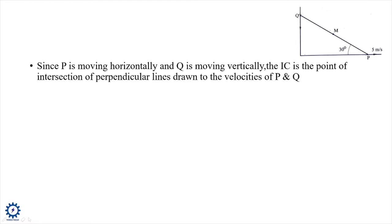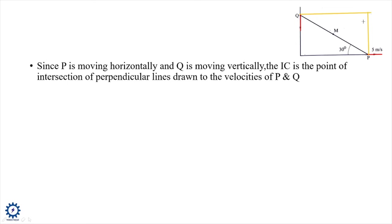Given: length PQ = 1 m, velocity of end P = 5 m/s, angle = 30°. Q moves vertically downward and P moves horizontally rightward. The direction of velocity at Q (vq) is vertical and velocity at P (vp) is horizontal — these are non-parallel. We draw perpendiculars to each velocity direction to locate the Instantaneous Center I.